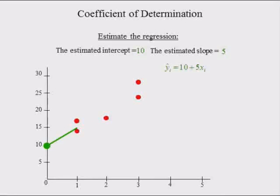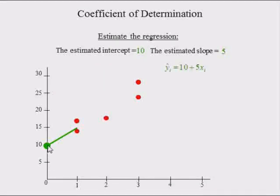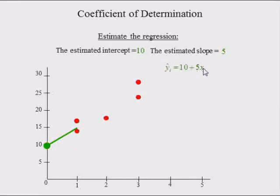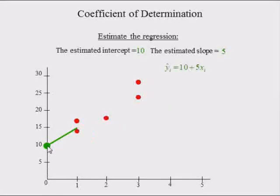To graph this line, start at intercept 10. At this point, x is 0 and y is equal to 10. Plugging in x equals 0: 0 times 5 is 0, and 0 plus 10 is 10. So we start at the intercept right here.